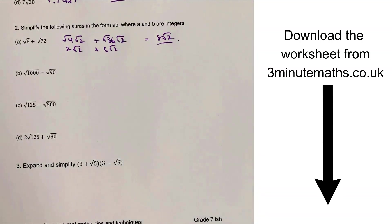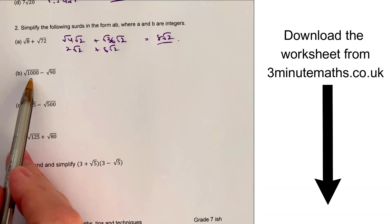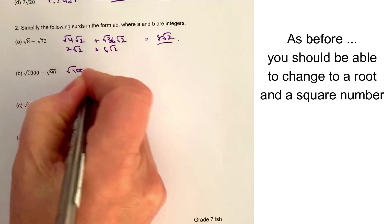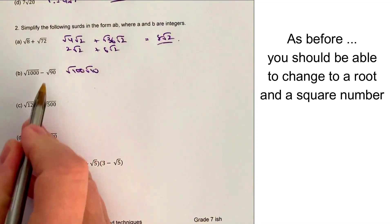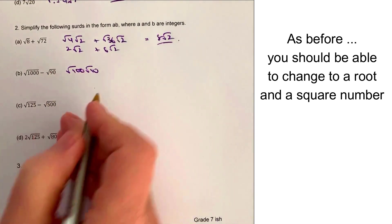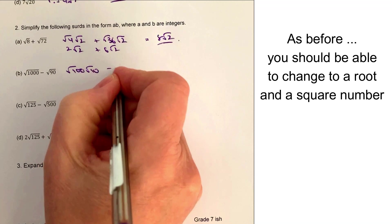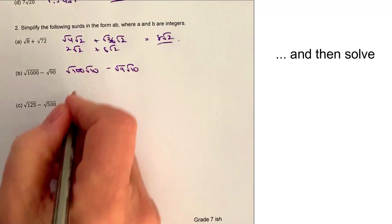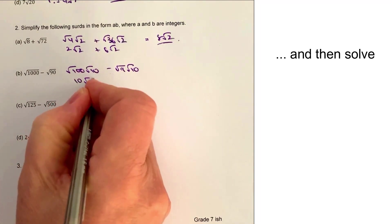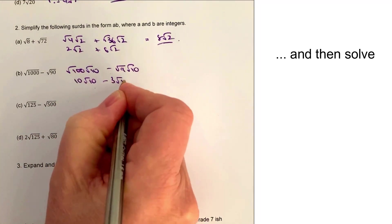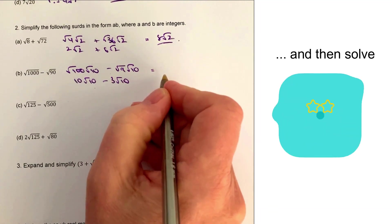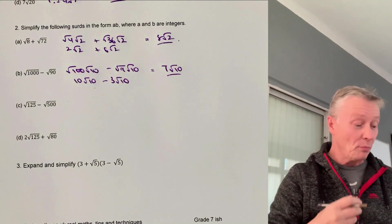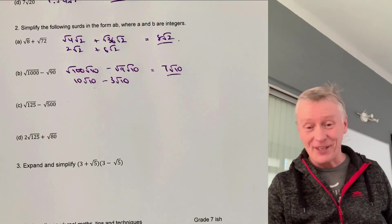Root 1000 is the same as root 100 times root 10, and root 90 is the same as root 9 times root 10. The square root of 100 is 10, so that would be 10 root 10 minus 3 root 10. So the answer to this question would be 7 root 10. And that would be part B of question 2.